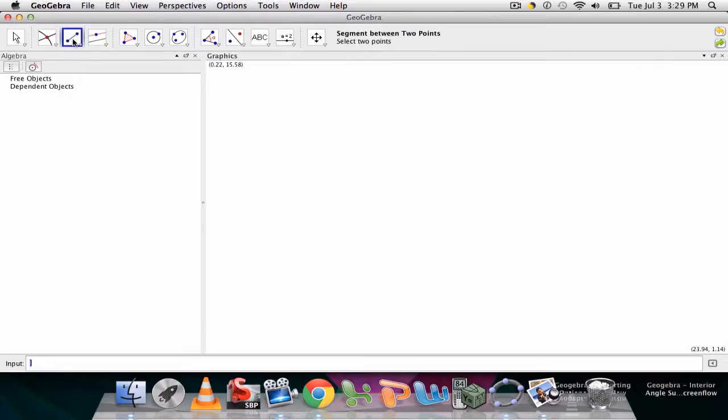In this video we're going to construct a square. The first thing I would do is create a line segment with my line segment tool right here and click for two points A and B.